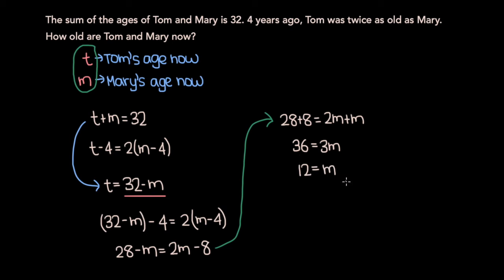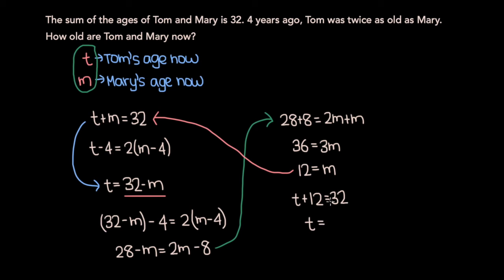Now to solve for Tom's age, we plug M equals 12 back into the first equation. We know T plus 12 equals 32, so subtracting 12 from both sides gives T equals 20. Our final answer is that Tom is 20 years old and Mary is 12 years old.